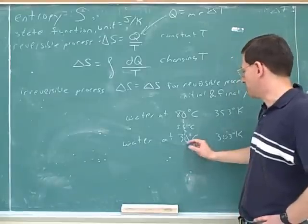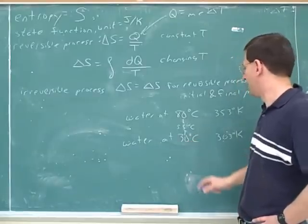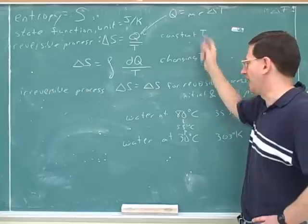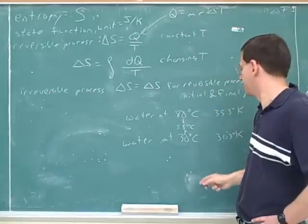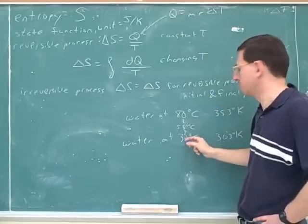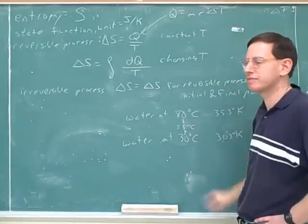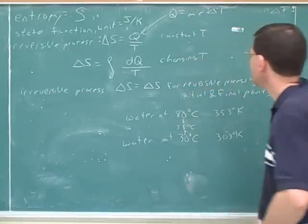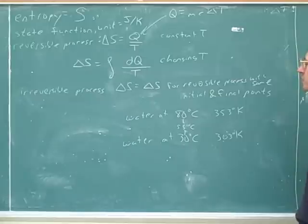Then we could figure out the entropy change for this water by again using Q = MCaT, and for it the average temperature would be halfway between 55 and 30. So you could do that as an approximation.